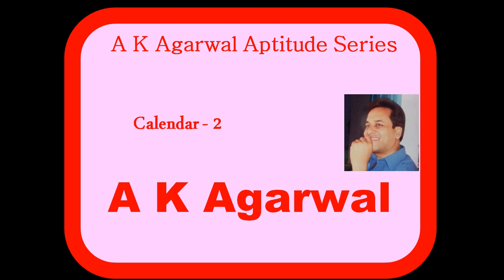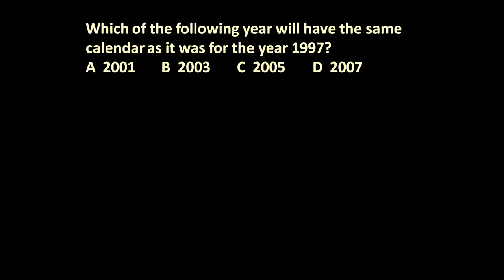Hello friends and welcome to AK Agarwal Aptitude Series. In this session, we are going to learn a technique for solving a problem on calendars. The given problem is: which of the following year will have the same calendar as the year 1997? Options are 2001, 2003, 2005, and 2007.